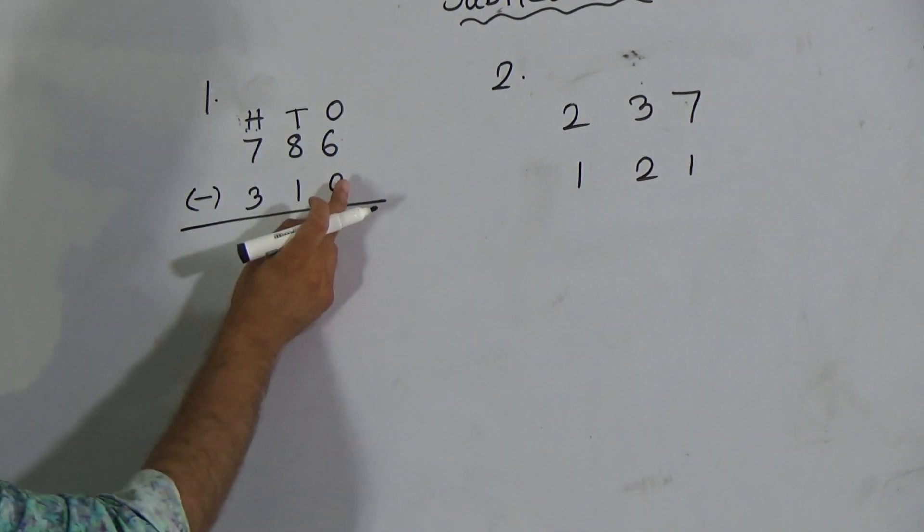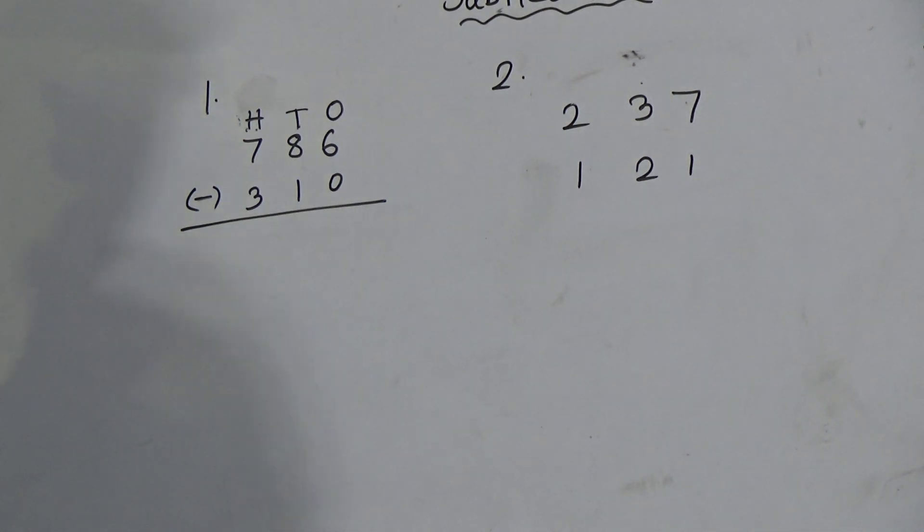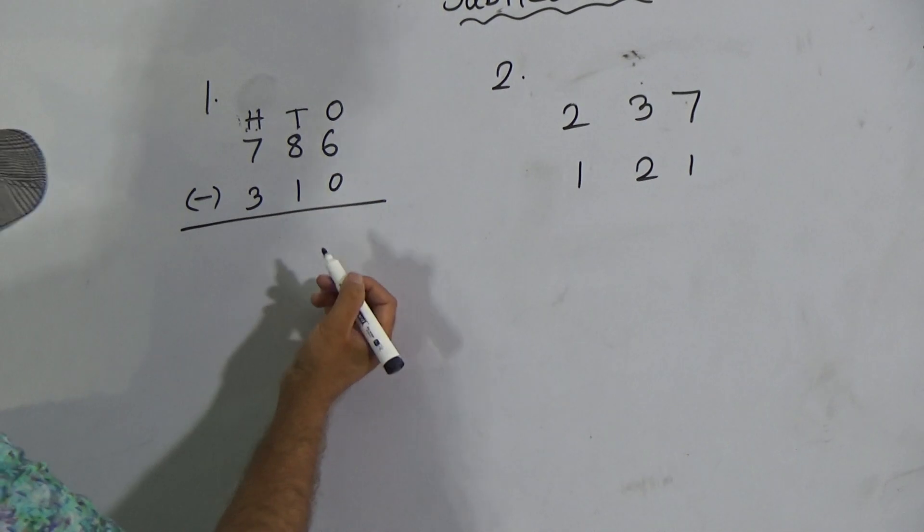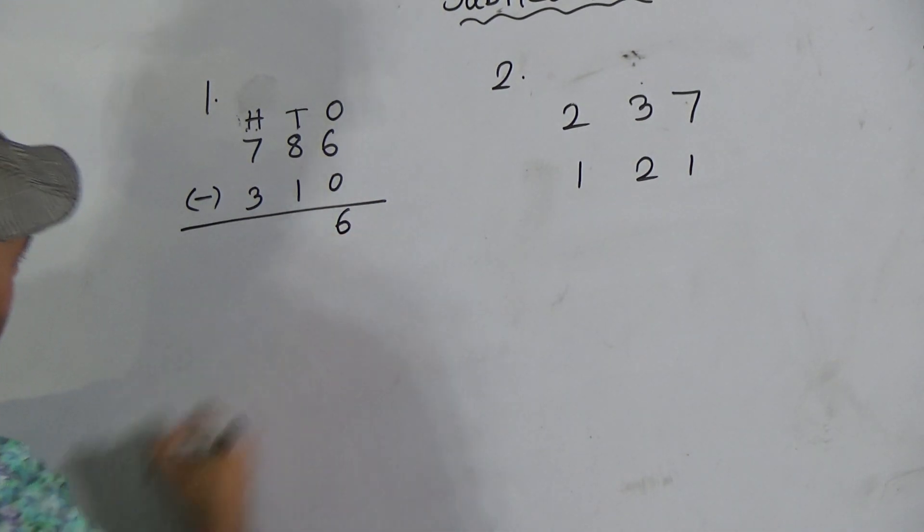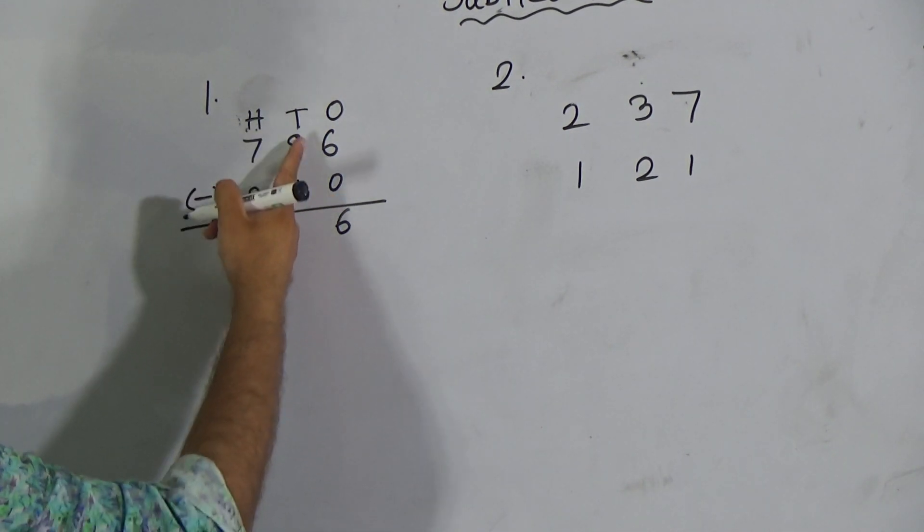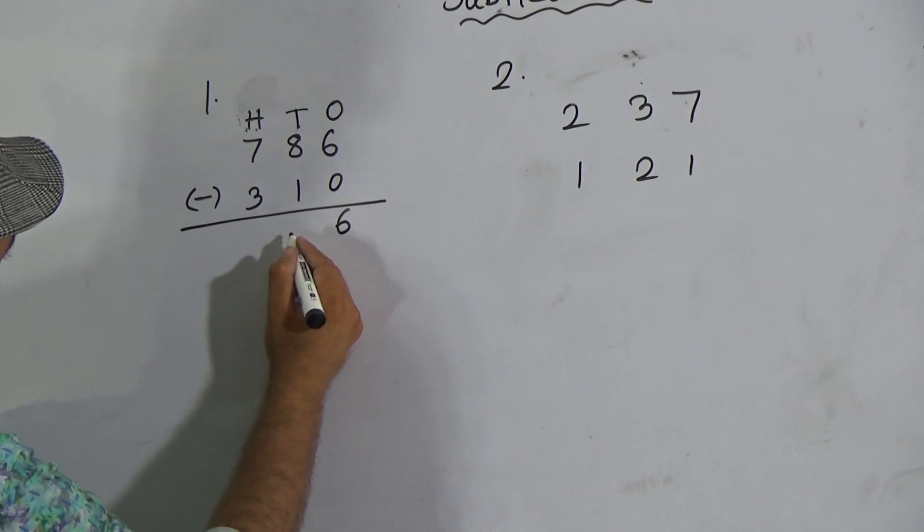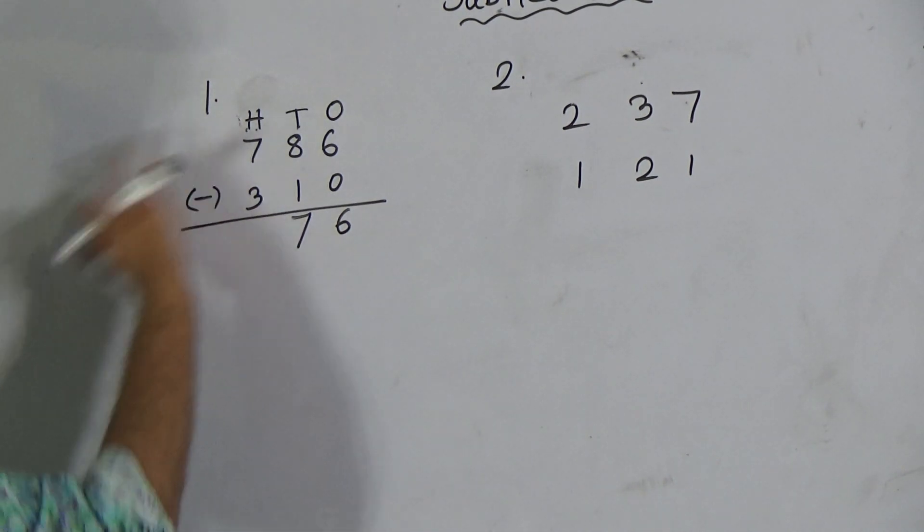Now subtract 0 from 6. My students, you have to remember that always you will start your subtraction, your addition, or your multiplication from ones place digit. 0 from 6 is 6. Go to the next column, tens place digit 1 and 8. Subtract 1 from 8, it will be 7.